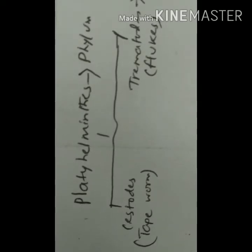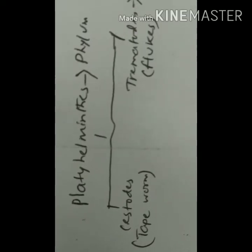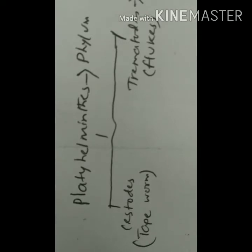Today the topic of our discussion is helminths. Medically important parasites can be divided, depending on their morphology or cell structure, into two different categories: one is the Protozoa and another one is the Metazoa. The Metazoa are multicellular parasites and are usually called the helminthic parasites.